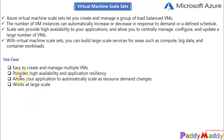The second use case is providing high availability and resilience for your applications. If one VM has a problem, customers continue to access your application through another VM instance with minimal interruption. New users will communicate with another virtual machine that is already placed in a high availability zone. Scale sets automatically distribute VMs within a single data center or across multiple data centers, and they allow your applications to automatically scale as resource demand changes.